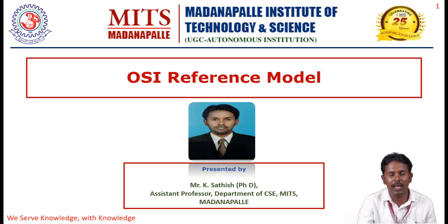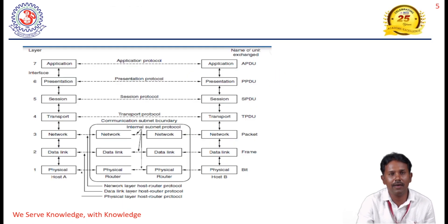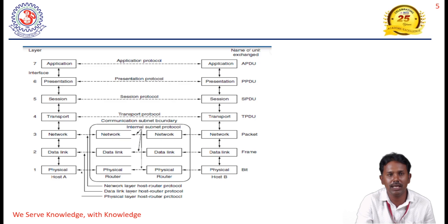The main purpose of this OSI model is to describe how data will be transferred from source to destination when a person wants to communicate with another person. All that information is transmitted or received with the help of this OSI model. The seven layers are: physical layer, data link layer, network layer, transport layer, session layer, presentation layer, and application layer.